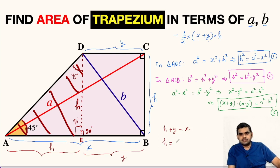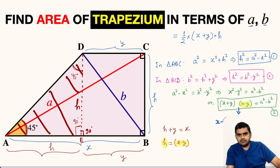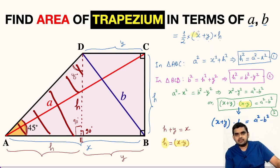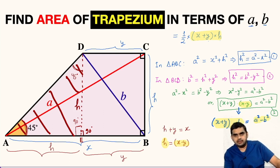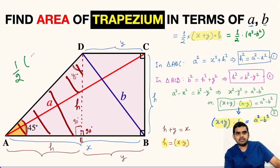We can substitute X − Y as H in equation number 3. So the equation becomes (X + Y) × H = a² − b². Looking at the area formula, it was half × (X + Y) × H, and we have found (X + Y) × H = a² − b². Therefore, the area of this trapezium is half × (a² − b²) square units.